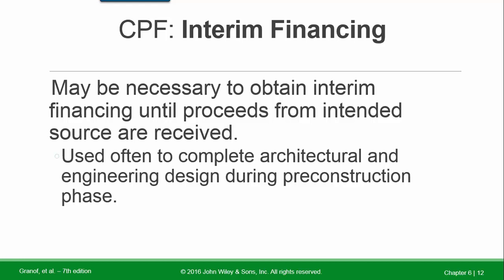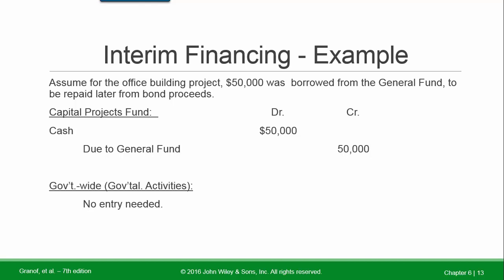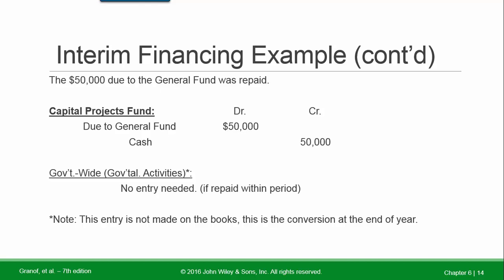Interim financing may be necessary to obtain interim financing until proceeds from the intended source are received. It is often used to complete architectural and engineering design during the pre-construction phase. Example: For the office building project, $50,000 was borrowed from the general fund to be repaid later from bond proceeds. In the capital projects fund: debit Cash, credit Due to General Fund. This has no effect on government-wide reporting. When the $50,000 due to the general fund is repaid: debit Due to General Fund, credit Cash. No entry is needed in the government-wide statements.